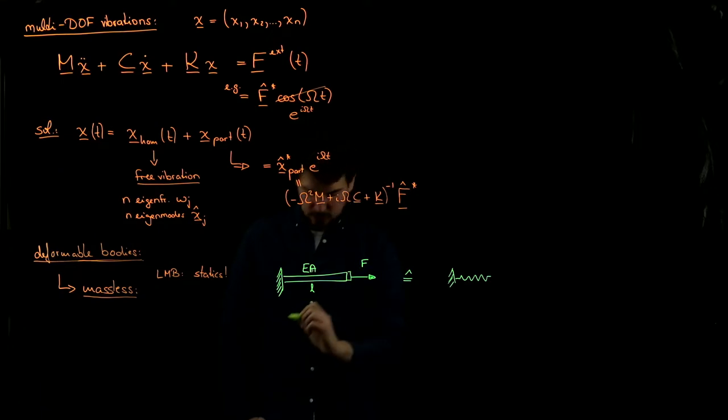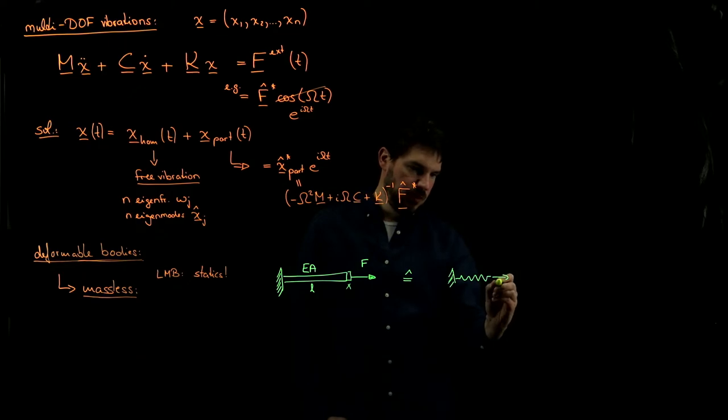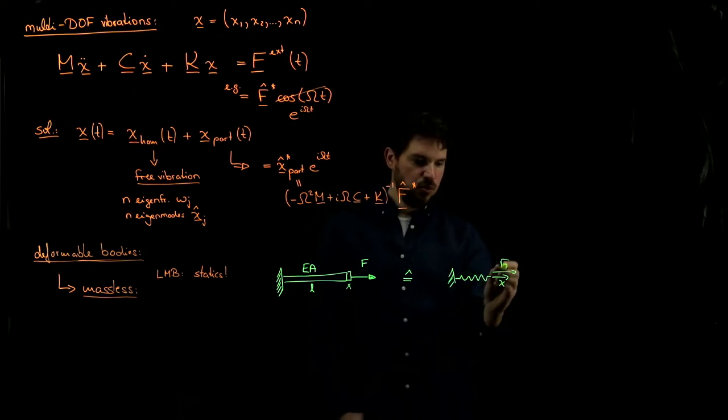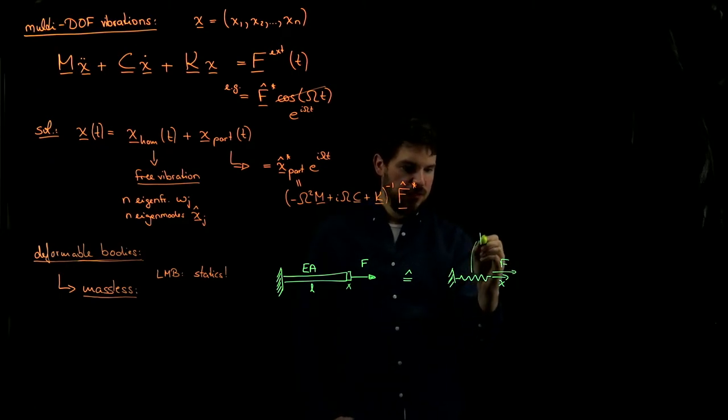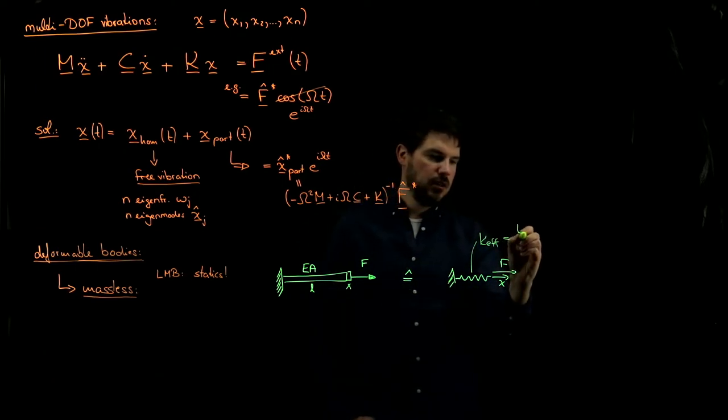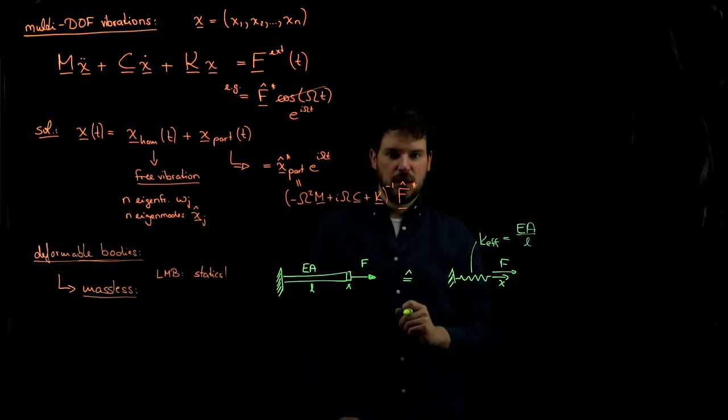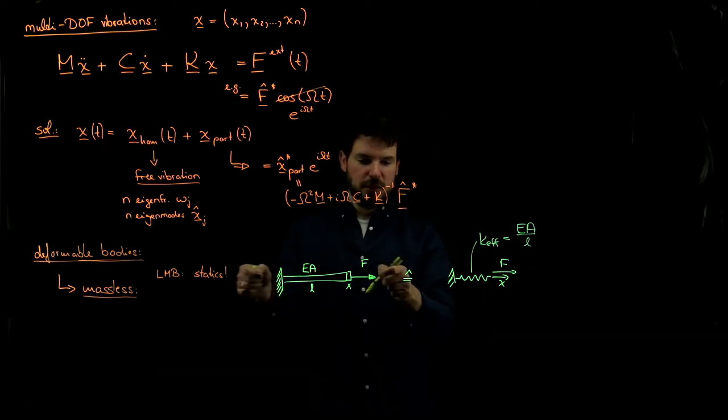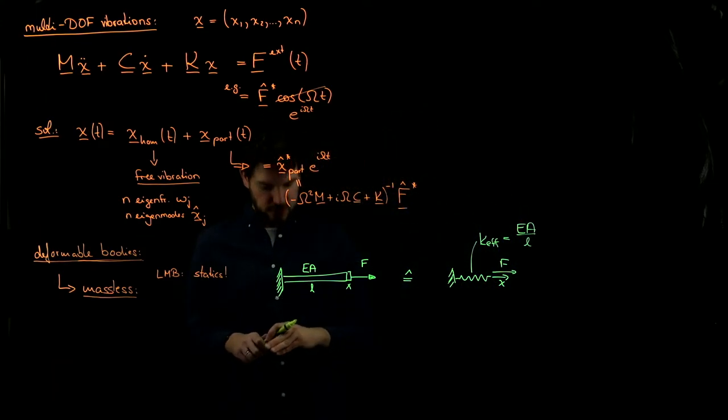If you apply a force, then this becomes longer by a little bit. Let's call this x. And so if this is being stretched by x by the application of a force F, these two are related through a spring essentially. And the effective spring constant that we have here can be obtained from this system, and it's nothing else but EA over L. You will find this in the formula collection. So if you ever see a massless bar being stretched, you can replace it by a spring. All you have to do is make sure you use the right effective spring constant.